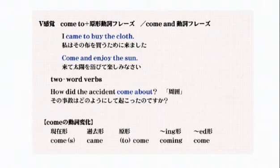「how did the accident come about?」その事故はどのようにして起こったのですか。これも詳しく説明しますけれども、aboutは周囲で、周囲に出現したのかということですね。だからどのようにして起こったのですかということになります。